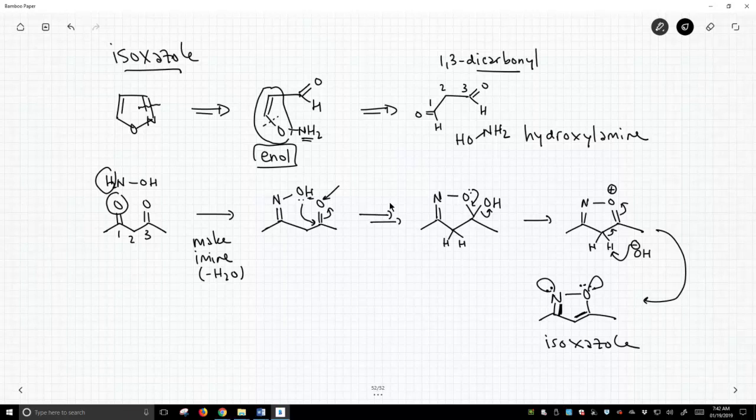So isoxazoles are also very easy to make. If you have access to 1,3-dicarbonyl compounds like we see on the bottom left, as well as hydroxylamine. Just throw these together. Wait a little while. And come back. And often you'll have nice crystalline products.